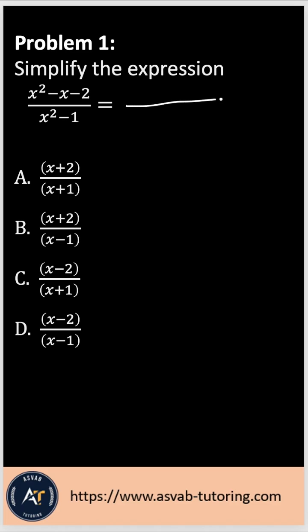In order to solve this problem, you have to factorize top and bottom. Let's do it together. X squared minus 2x plus x minus 2, and the bottom equals x plus 1 times x minus 1.